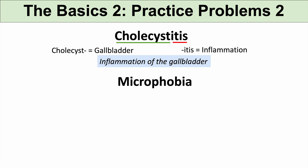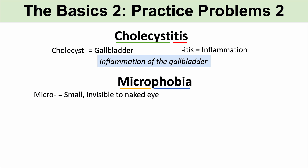The next practice problem is microphobia. The prefix micro — you can think of words like microscopic — means small, and often refers to things invisible to the naked eye. And the suffix phobia means fear of. So microphobia is a fear of small objects.